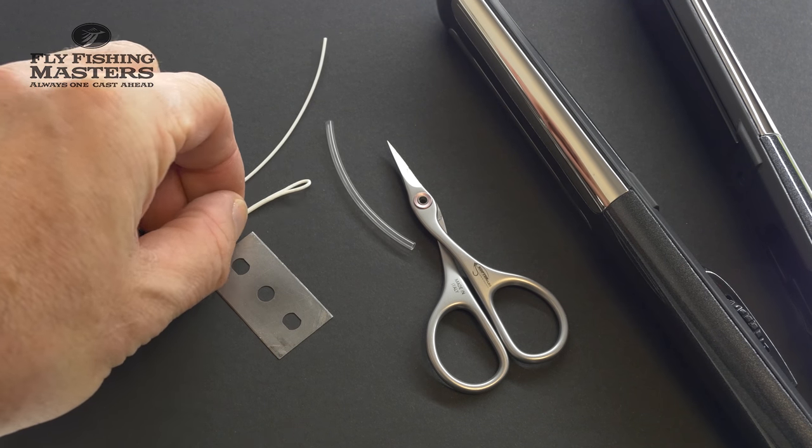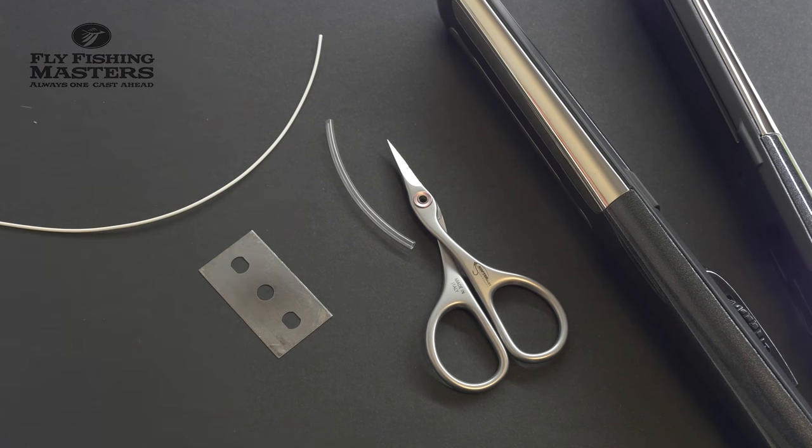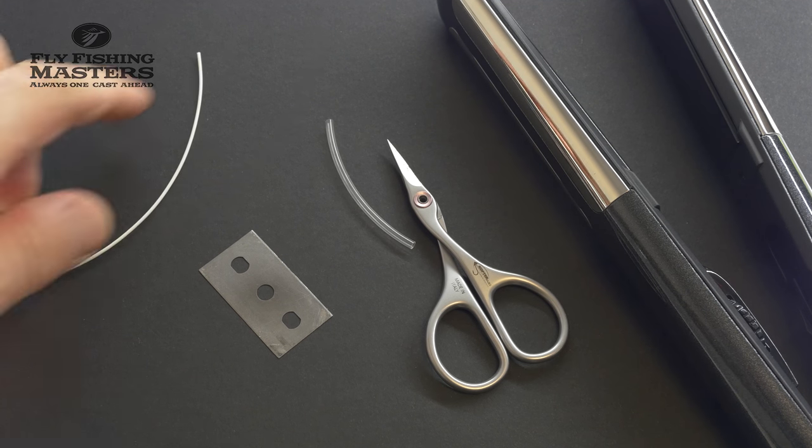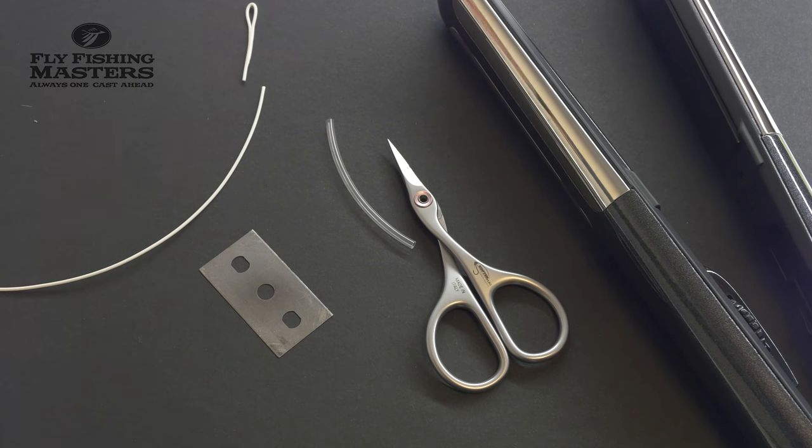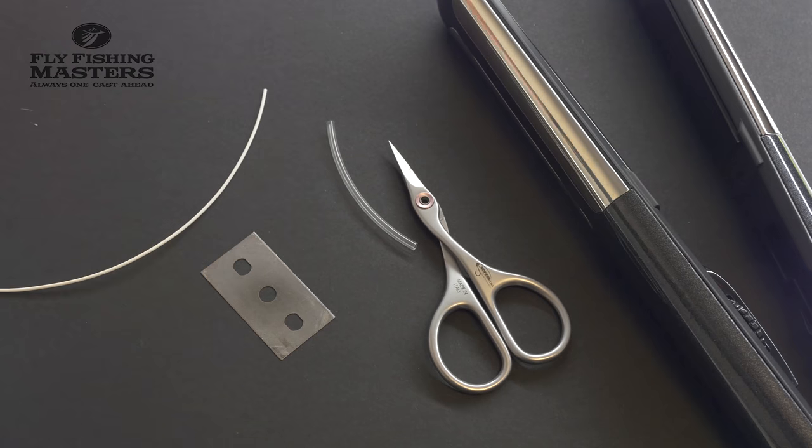The loop you can see in the picture was attached to my fly line before, and I just cut it off to show you how to make a new one. It was on this end of the line as you can see.